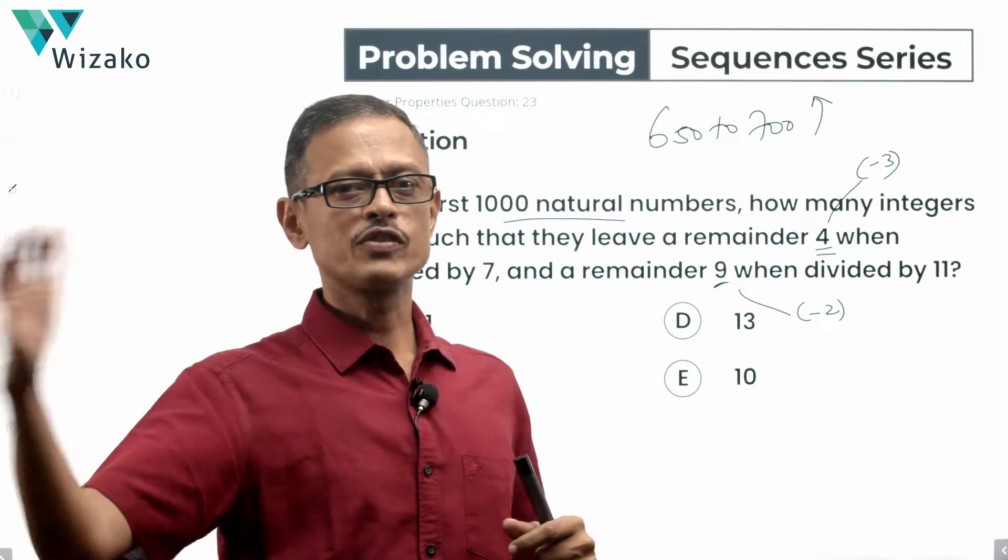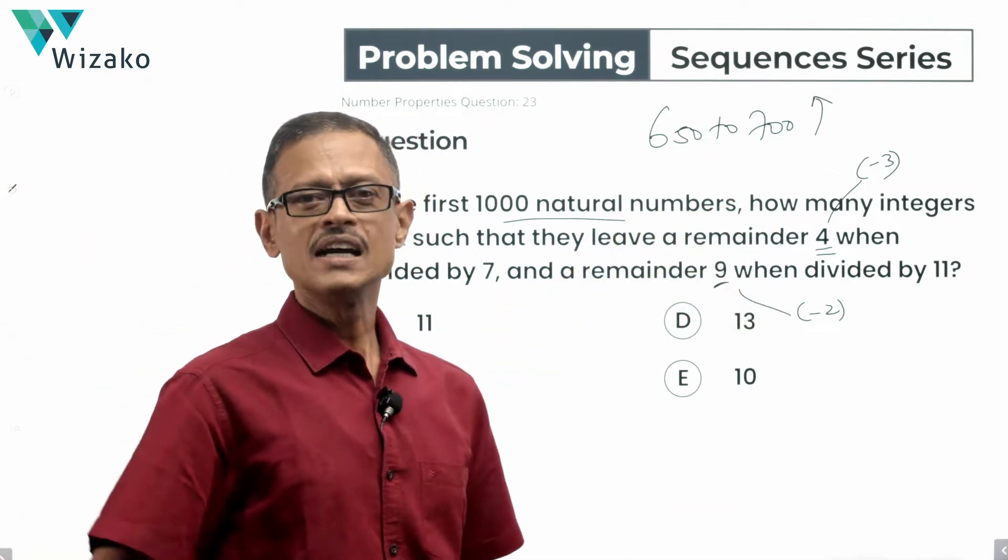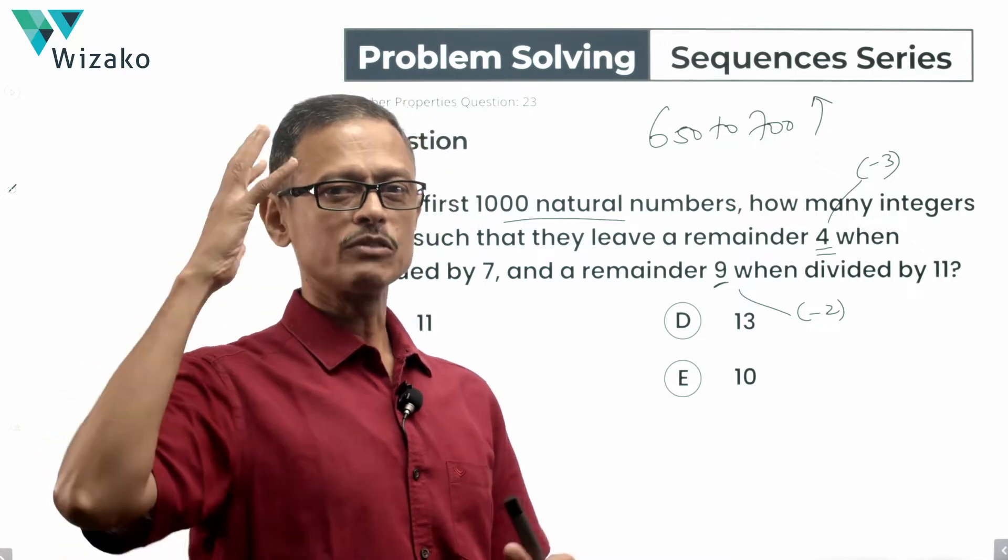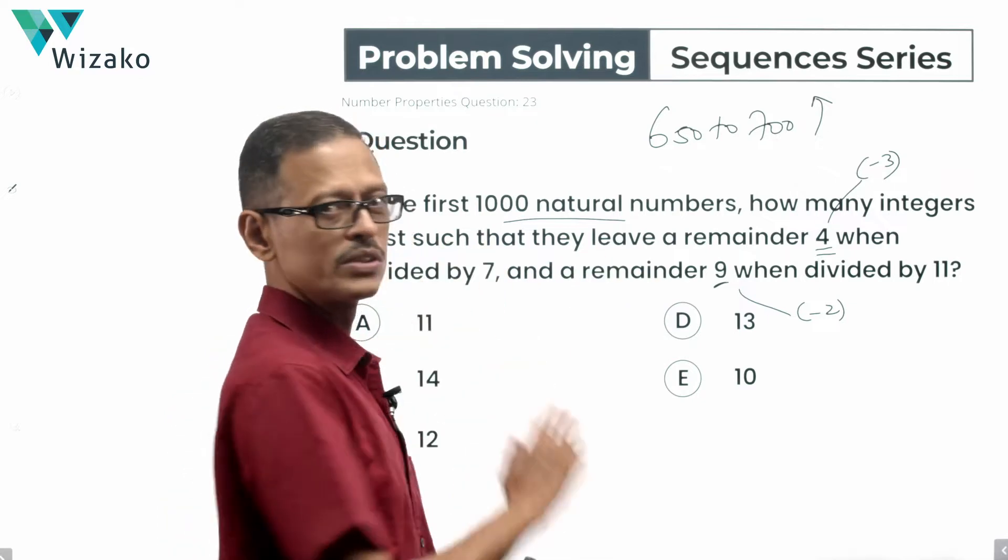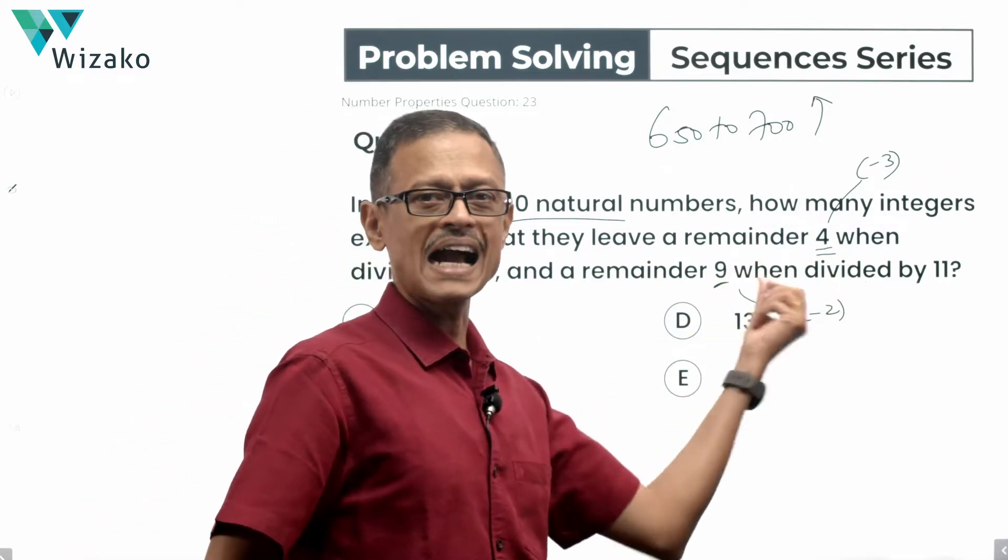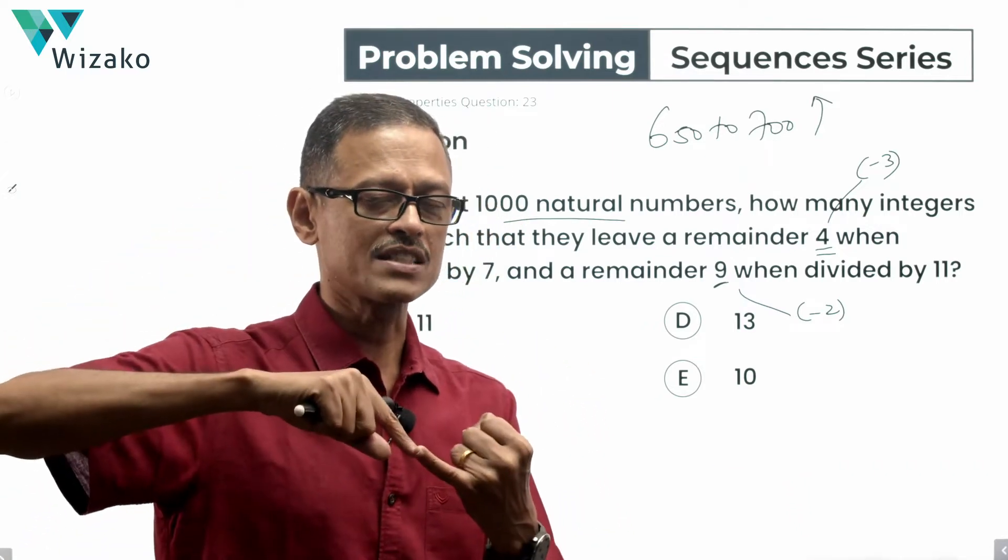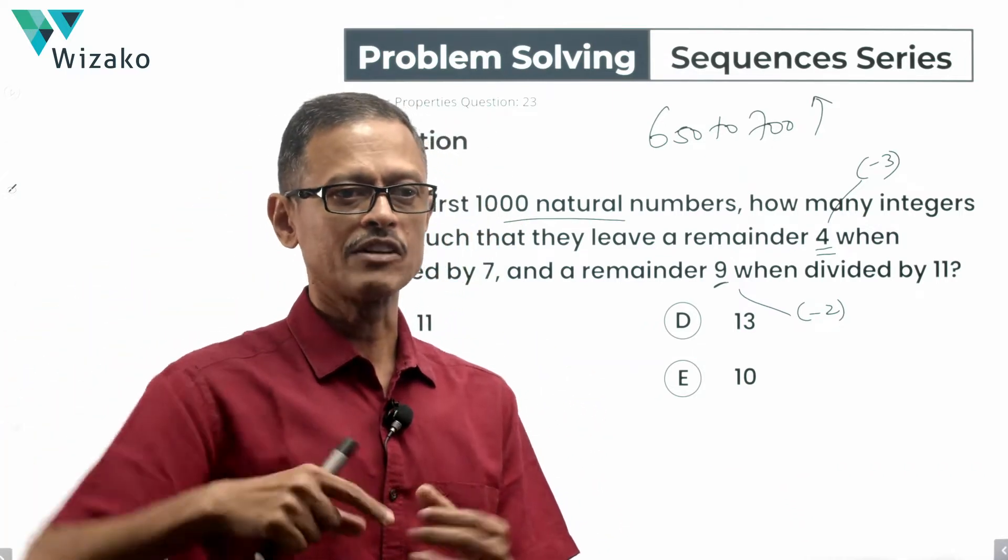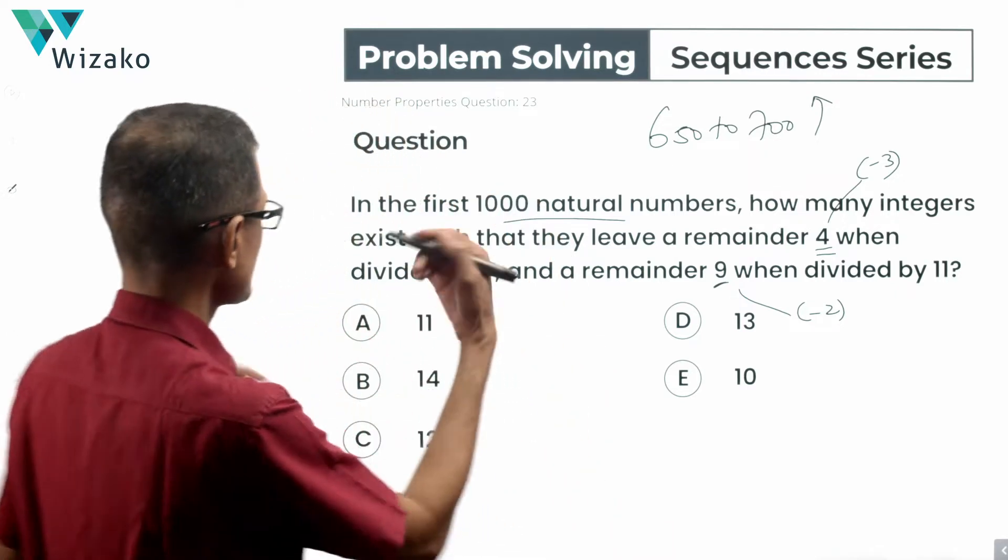Now that the remainders positive or negative are not same for both these sequences, we will list down the first few terms, probably 7-8 terms for the first sequence and the second sequence and we have to manually through brute force find out the first term that is common to both these sequences. Because we want a number which belongs to the first sequence and to the second sequence. It should be a part of both the sequences. It should be a common element to both the sequences.